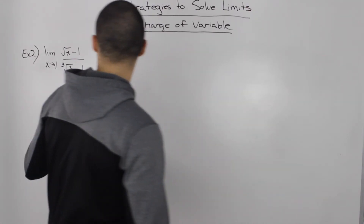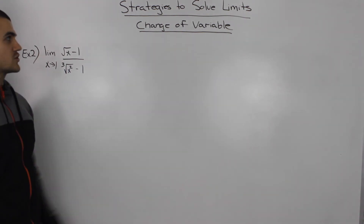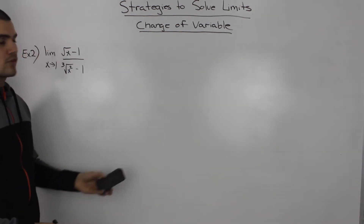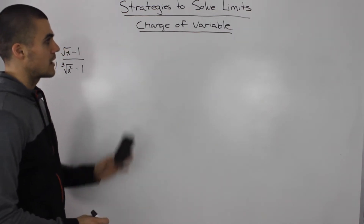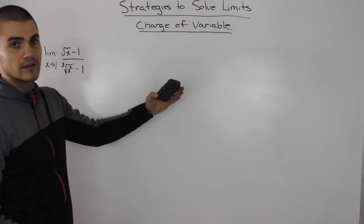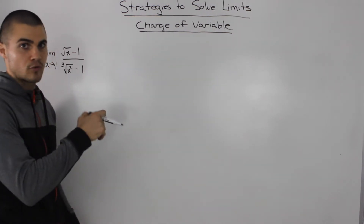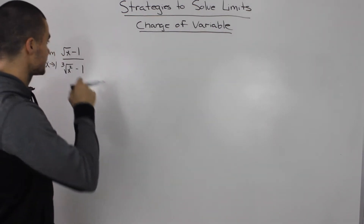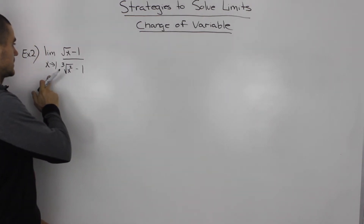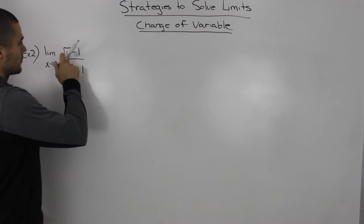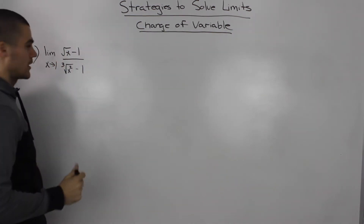Alright, so moving on with our second example for change of variable. Now if you didn't go over the first example, make sure you do because I go over the general format that we're going to work with for these kinds of questions and I'm going to use the same format. So we have this limit as x goes to 1 of the square root of x minus 1 over the third root of x squared minus 1.